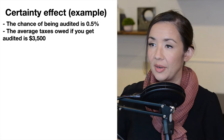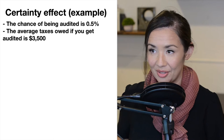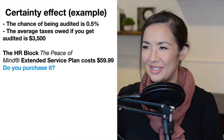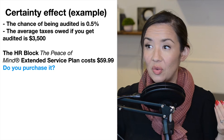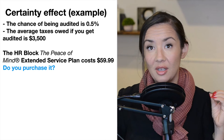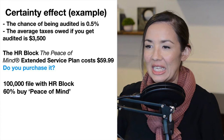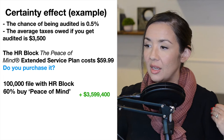The certainty effect is illustrated by H&R Block's Peace of Mind plan. The chance of being audited is 0.5%, and the average taxes owed if audited is $3,500. H&R Block offers extended service for about $60 that covers you if you get audited, taking your chance from 0.5% down to 0%. If 100,000 people file with H&R Block and 60% buy this plan, the profits to H&R Block would be $3.5 million, while covering audits would cost them only $1.7 million — a massive profit.